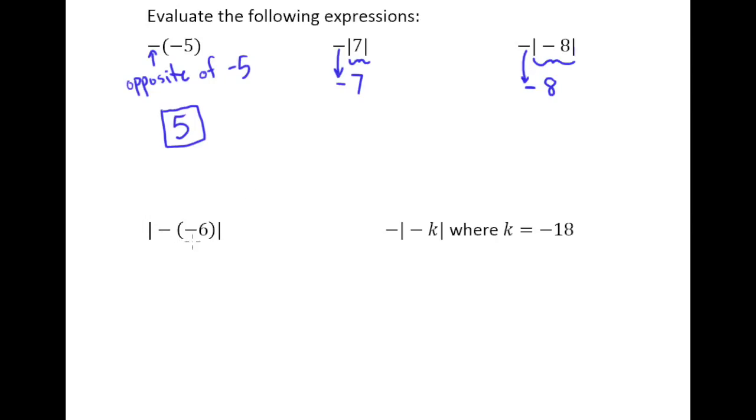Now down here we've got some complicated things going on inside the absolute value, so if there are things that need to be simplified inside these vertical bars, do that first. So we recognize this is the opposite of negative 6, and the opposite of negative 6 is 6.